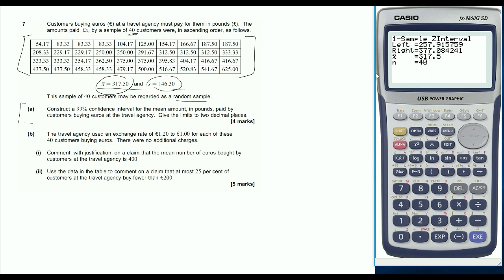That gives us our confidence interval. So our confidence interval is equal to 257.92 to 377.08. Make sure you read the question properly and give limits to two decimal places.